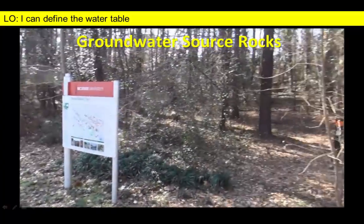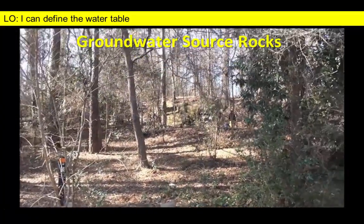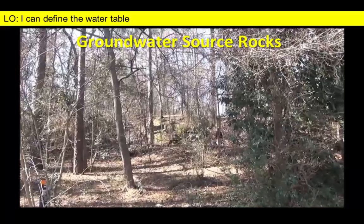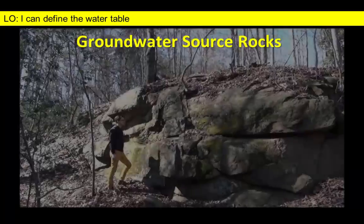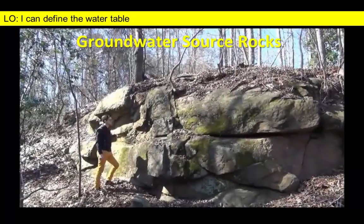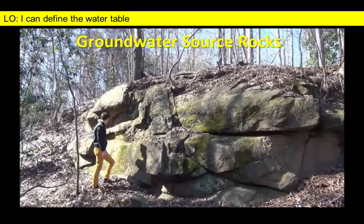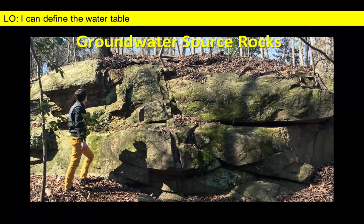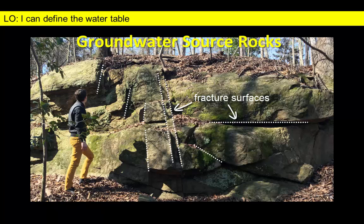If we look around, we can find outcrops of bedrock not far from the wells. The bedrock here is a type of metamorphic rock. Normally, we wouldn't think of metamorphic rock as an ideal groundwater source, as these types of rock lack interconnected pore spaces. However, as you can see from this outcrop, these rocks contain numerous fractures providing lots of pathways for water to enter the groundwater system.